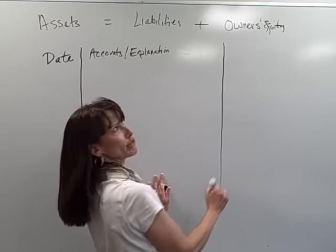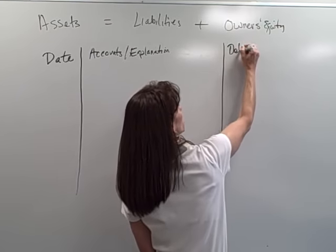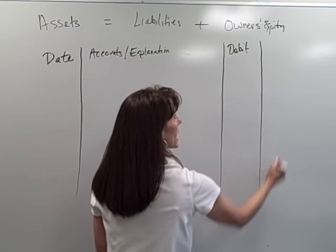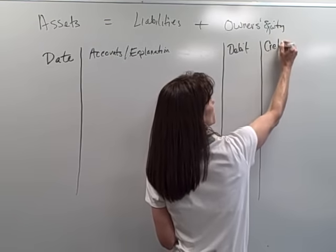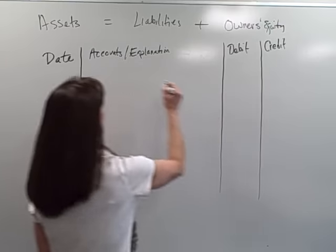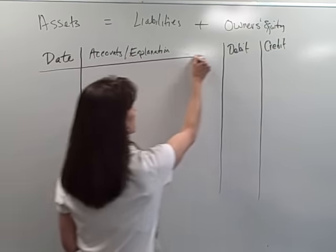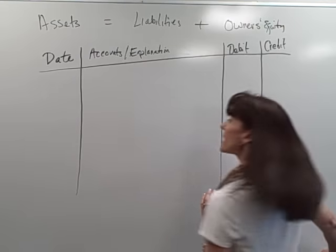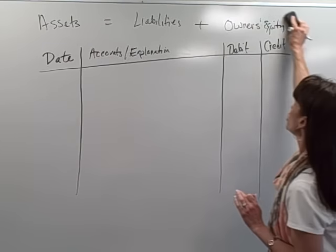Hopefully I'm drawing this kind of straight. It has a debit column and it has a credit column. So this is our heading at the very top of each journal page. And of course, it'll have journal page one, journal page two, etc.